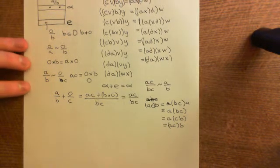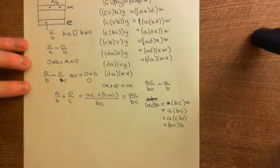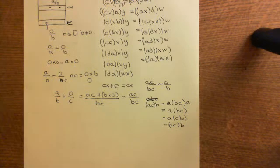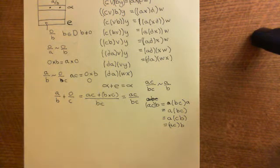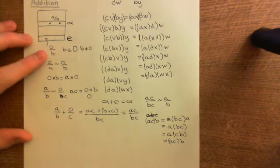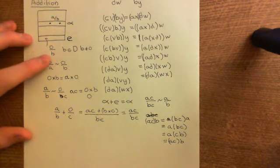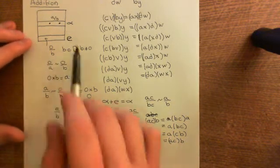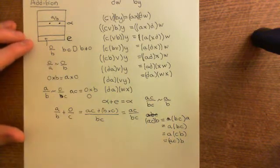We're making sure that it forms an abelian group under addition. The first axiom of an abelian group is that you need an identity element. We've agreed that the equivalence class where you have zero in the numerator and every possible element from the domain, apart from the additive identity element, in the denominator, is going to form our additive identity.